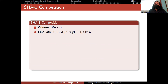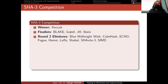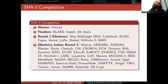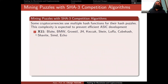The SHA-3 finalists were Blake, Grøstl, JH, and Skein. The round-two eliminates included Blue Midnight Wish, CubeHash, Echo, Fugue, Hamsi, LUFFA, Shabal, SHAvite-3, and SIMD. These are somewhat important because most of these algorithms are used in hash puzzles in cryptocurrencies.